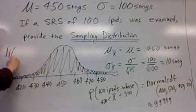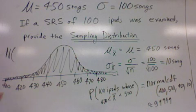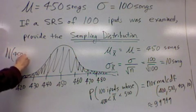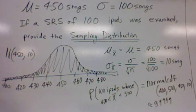Sometimes it's convenient to write it in this notation too. You could write N(450, 10), and that communicates the average and the standard deviation.